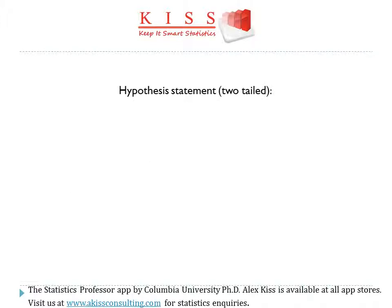The two-tailed hypothesis statement will be as follows. H0, the null hypothesis, is that mu the mean equals C, which is just some constant, whereas the alternate hypothesis will be that mu the mean does not equal C.